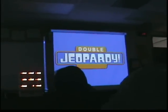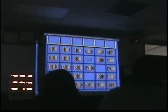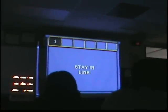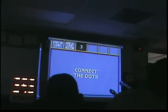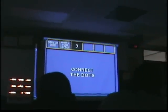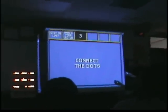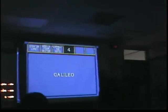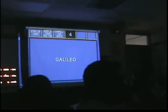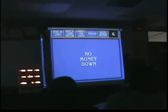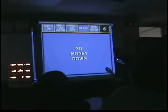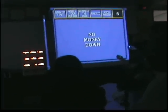And now, Double Jeopardy! Today's Double Jeopardy categories are: Stay in Line, which has to do with linear motion; What's Your Vector, Victor; Connect the Dots, which deals with motion graphs; Galileo, items that deal with Galileo; Acceleration Nation, which has to deal with acceleration; and No Money Down, items that deal with free fall and objects in free fall.